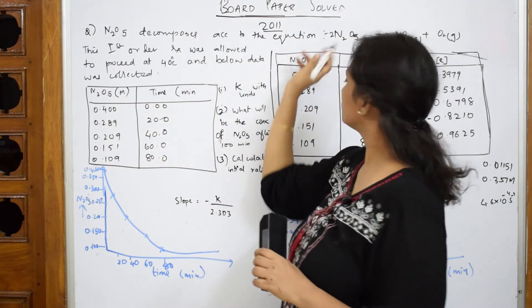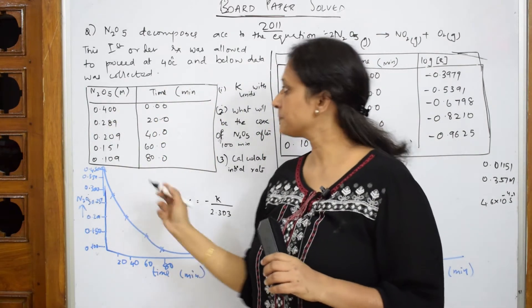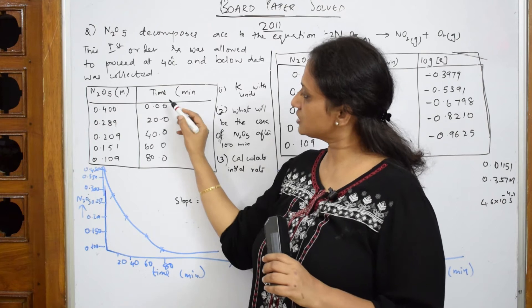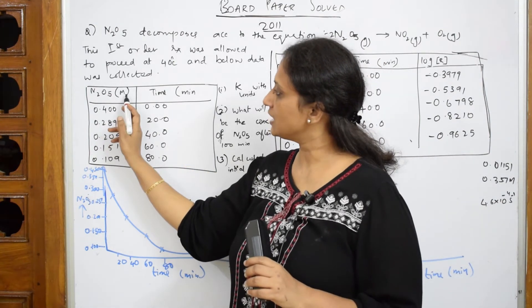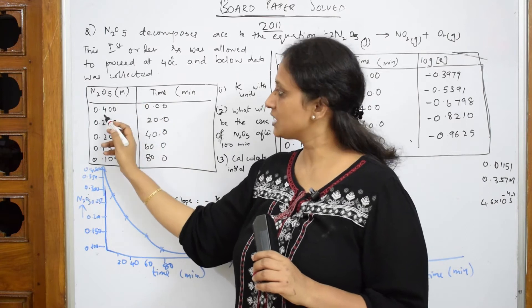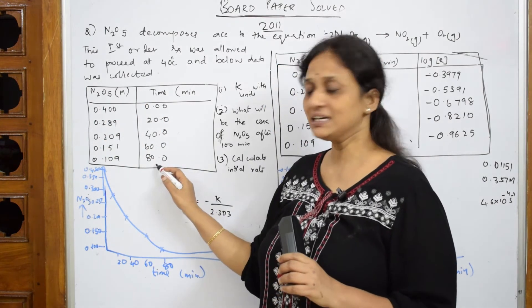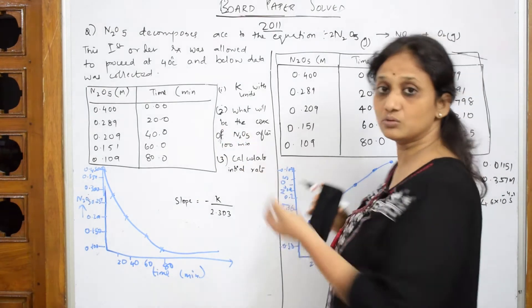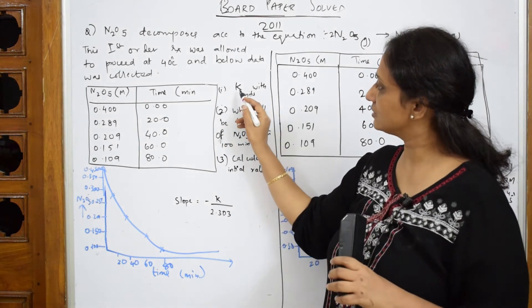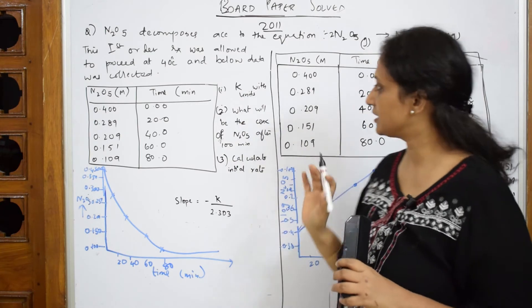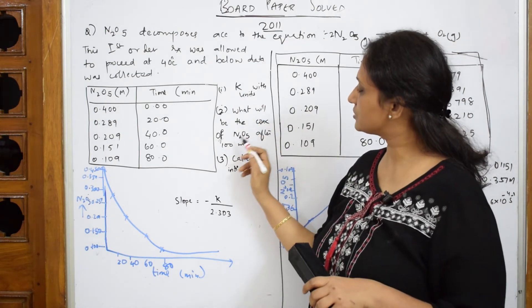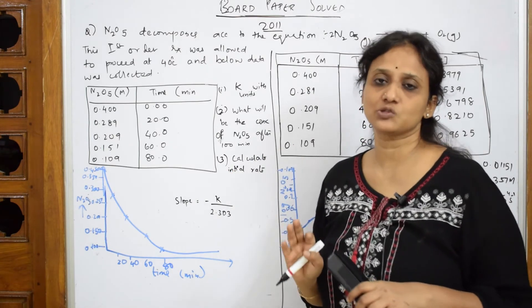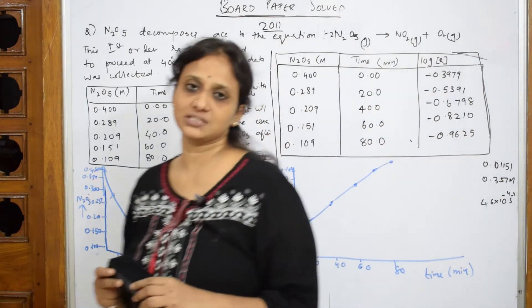They have collected - what did they do? They have picked this N2O5 and initial concentration was given to us and they have also recorded the time. Initially, when the time was zero, the concentration of N2O5, M stands for molar concentration, that is mole per liter. It was 0.400. When the reaction proceeded at 80 minutes, the concentration was so much. This is the data given. What do they want us to plot? They want us to find k, rate constant with units. Then, they have also given what will be the concentration of N2O5 after 100 minutes. I should also find this and I have to calculate initial rate also of N2O5.